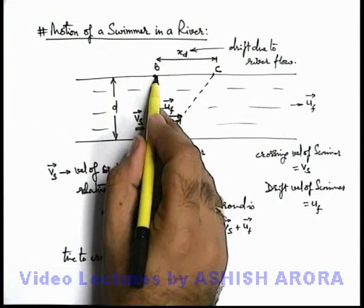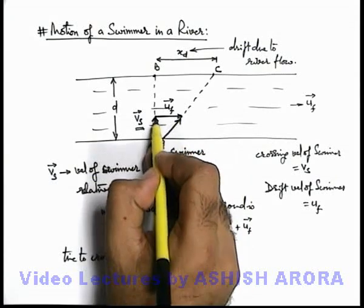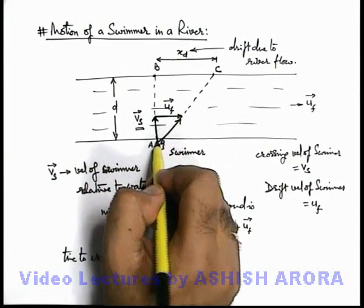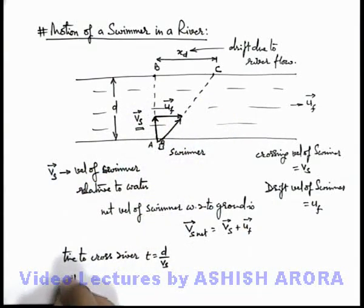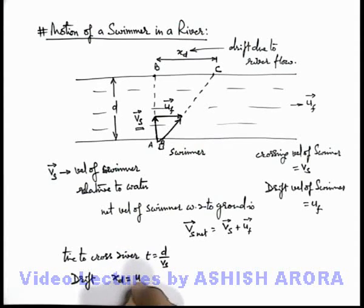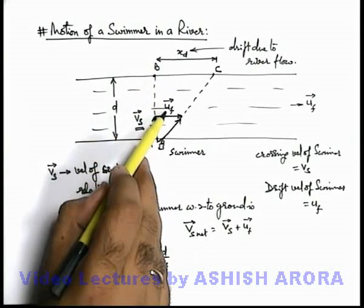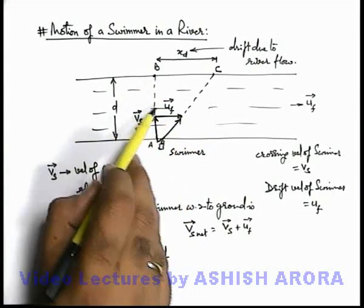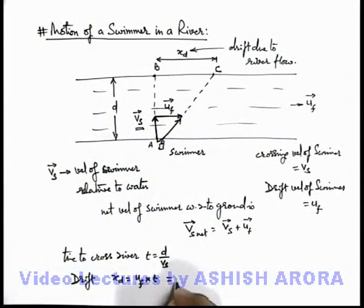Similarly we calculate the drift. This drift is provided only by the river current because the swimmer is only putting efforts in crossing the river, not along it. So the drift x_d can be written as u_f multiplied by the time taken to cross the river. That is: x_d equals u_f into d divided by v_s.